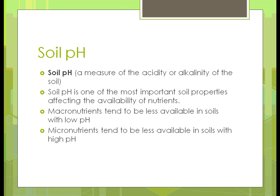Macronutrients tend to be less available in soils with a low pH. If your soil pH is around 0–3, that's an acid soil, meaning macronutrients like nitrogen, phosphorus, and potassium won't be available as much — even though they're there, they won't be used because the pH is too low. On the other hand, micronutrients tend to be less available at high pH. And if you have a high pH, it doesn't affect plant growth as critically because those micronutrients aren't needed in huge amounts anyway.